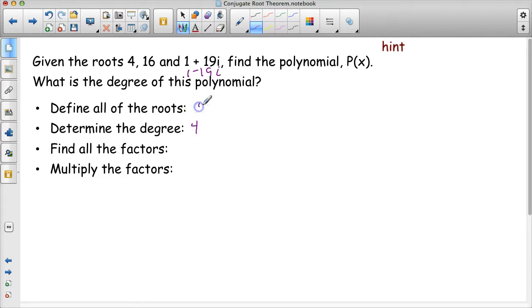The roots are 4, 16, 1 plus 19i, and 1 minus 19i. So in order to find the polynomial, I need to find all the factors. Remember that a factor means to take the root, change the sign, and stick an x in front of it. In other words, x minus 4 is one of my factors, so is x minus 16.